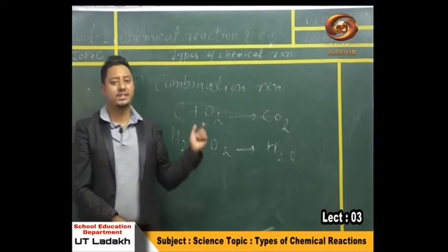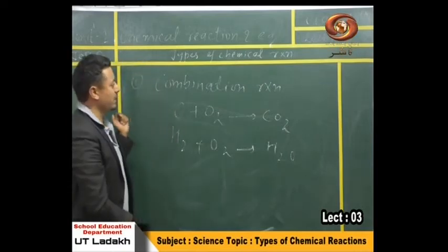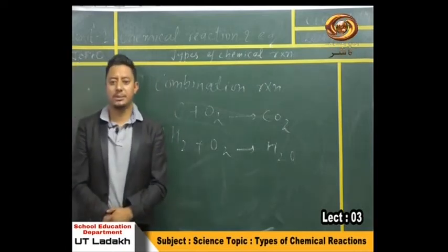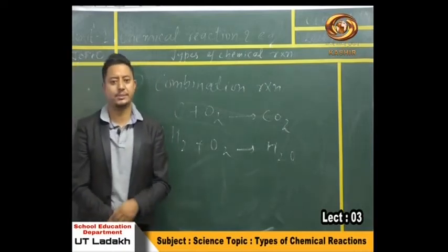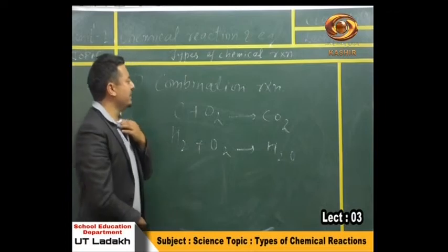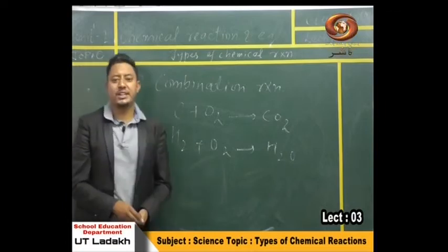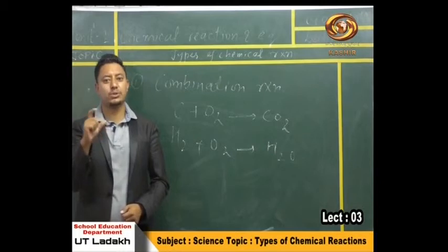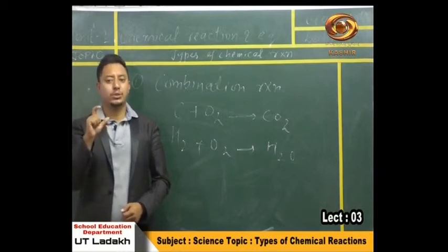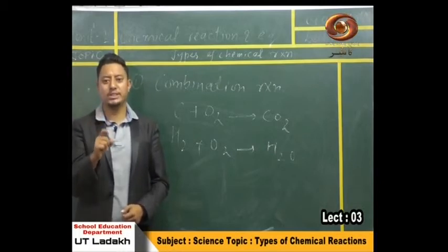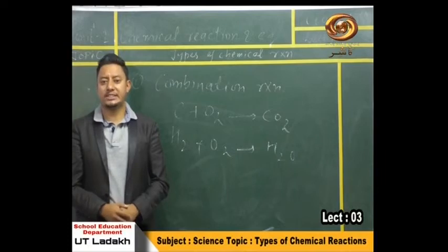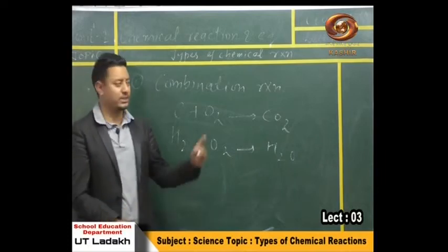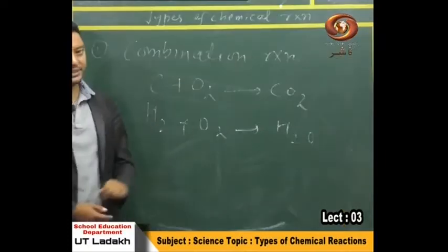In the types of chemical reactions, the first type we are going to discuss is combination reaction. What is a combination reaction? As the name suggests, combination means to combine. Those reactions in which two or more than two reactants combine to form a single product are known as combination reactions.